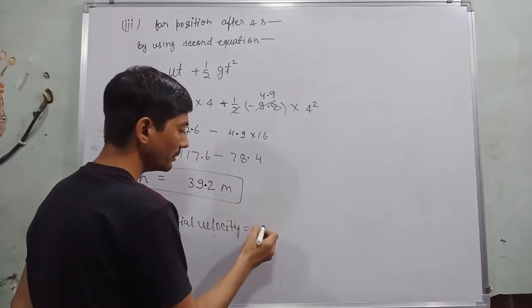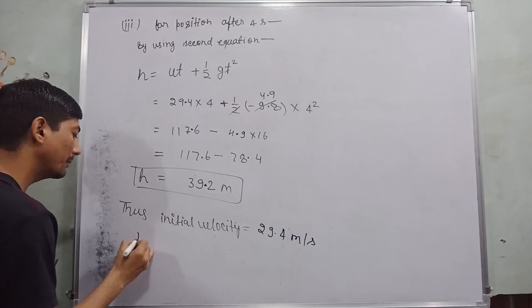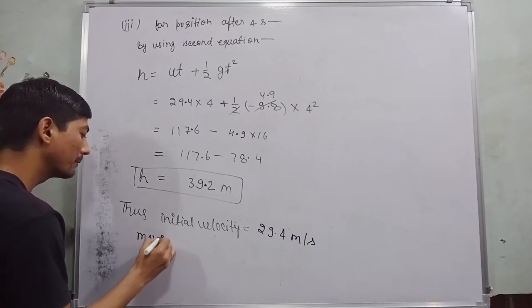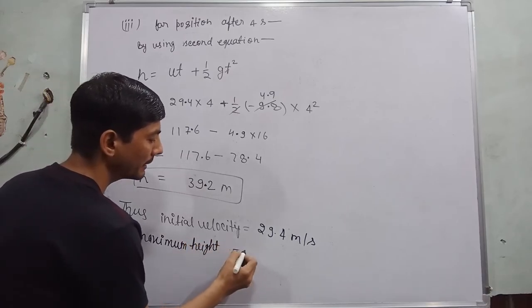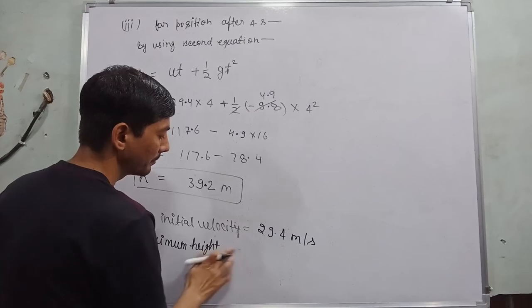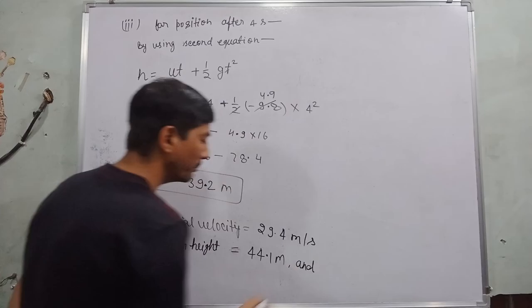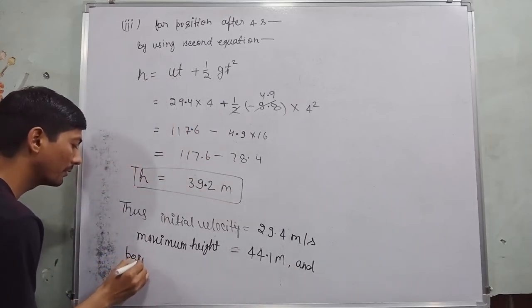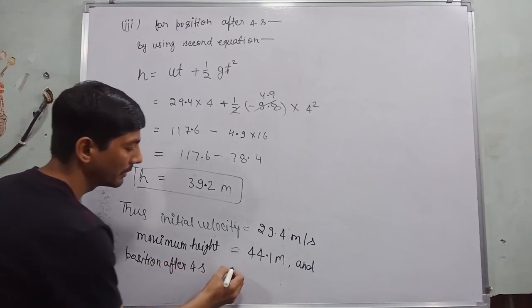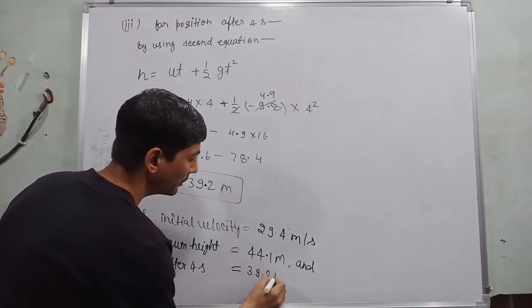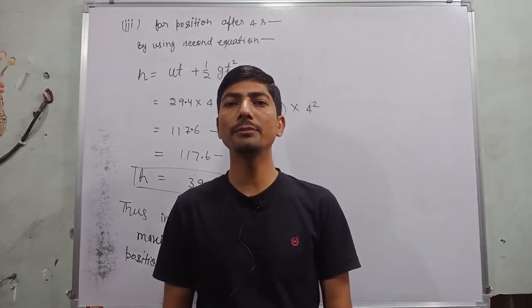initial velocity is equal to 29.4 meter per second, maximum height